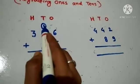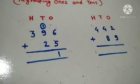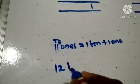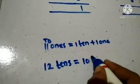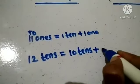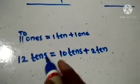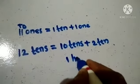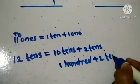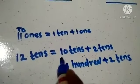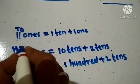Now add the 10's: 1 plus 9 is equal to 10, and 10 plus 2 is equal to 12 — that's 12 10's. 12 10's is equal to 10 10's plus 2 10's. 10 10's is equal to 100, so we have 1 hundred and 2 10's. Write 2 in the 10's column and carry forward 1 hundred to the 100's column.